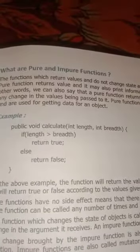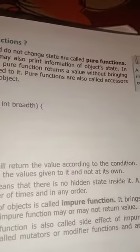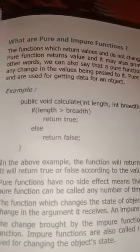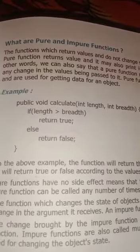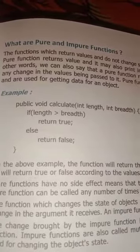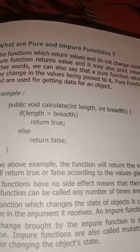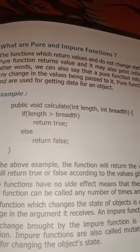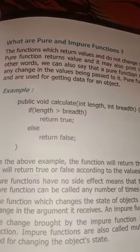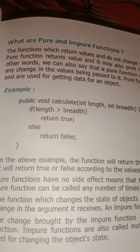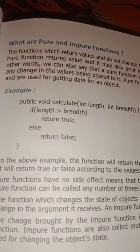The function which returns a value and does not change state is called a pure function. You can see here we have an example where we have created a class — a method actually — public void calculate, inside which we have declared length and breadth which are of integer type. We have written inside the method body: if length is greater than breadth then return true, else return false.